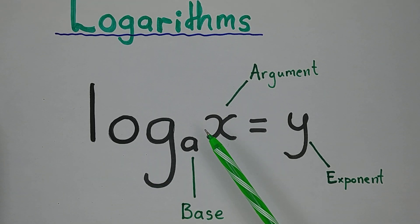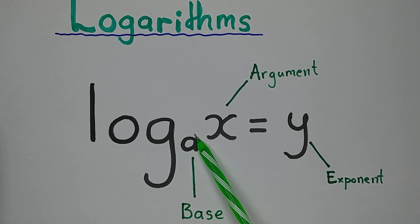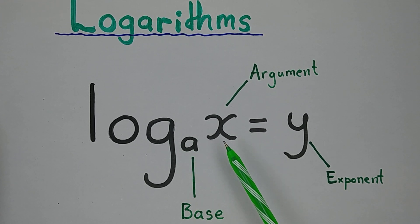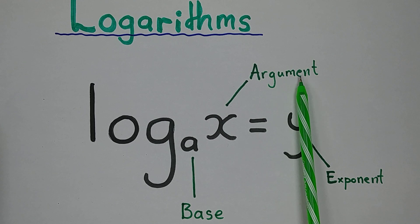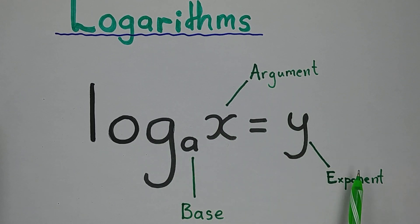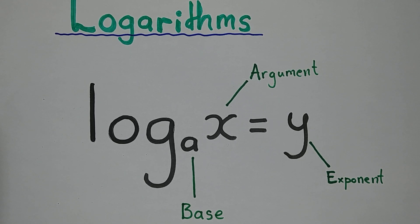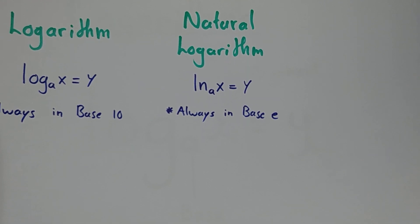A logarithm has mainly three parts. We have a variable down there as a base, then up there you can have the argument, which is the log, and on the other side we have the exponent. To read this expression: log x in base a equals y, meaning that log argument in the base equals the exponent.